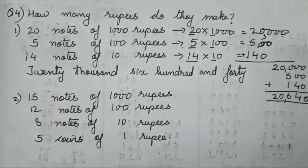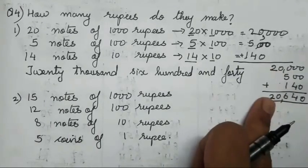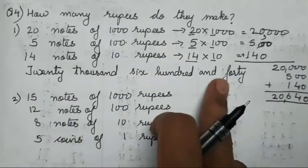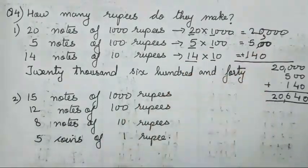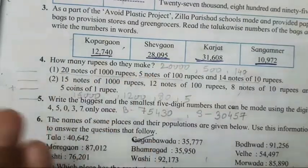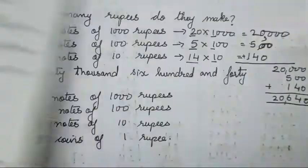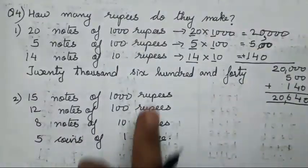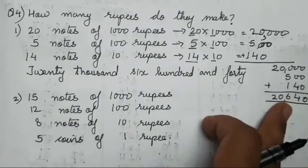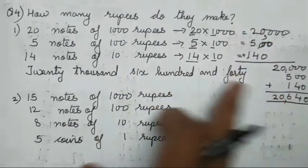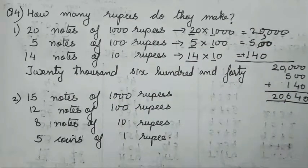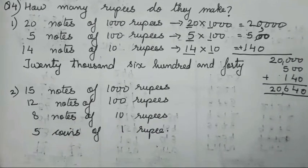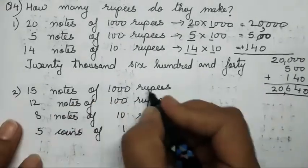They haven't asked you all to write in words but I am showing the total and the way it has to be written. Teachers are going to just write this and explain and end the question because they only asked how many rupees do they make — you only have to write the total, not necessarily in words. But follow the rules your teacher asks in school.